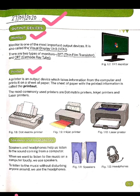Our second example is the printer. A printer is an output device which takes information from the computer and prints it on a sheet of paper. The sheet of paper with the printed information is called the printout. The most commonly used printers are dot matrix printer, inkjet printer, and laser printer.